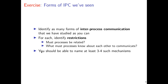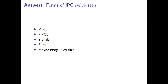A first pass is to look back at the IPC mechanisms we've studied so far. A good way to characterize them is to identify how they're typically used and any restrictions on their use — for instance, how do two processes have to be related, or what do they have to know about each other? There are at least three or four we've talked about, and since we've emphasized them earlier, you can expect them to show up on the exam.